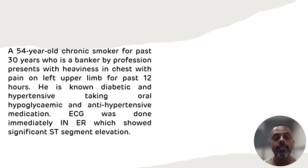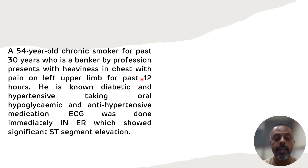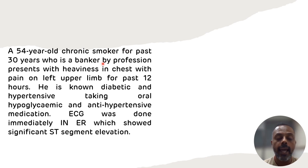So first, what is the description part? In the description, a 54 year old chronic smoker for the past 30 years, who is a banker by profession, presents with heaviness in the chest with pain on the left upper limb for the past 12 hours.